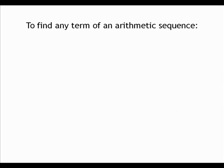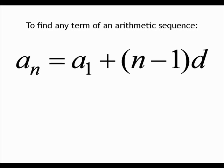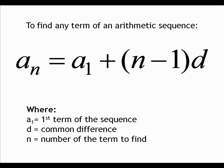To find any term of an arithmetic sequence, the formula a sub n is equal to a sub 1 plus parenthesis n minus 1 close parenthesis times d. Where a sub 1 is the first term of the sequence, d is the common difference, and n is the number of the term defined.